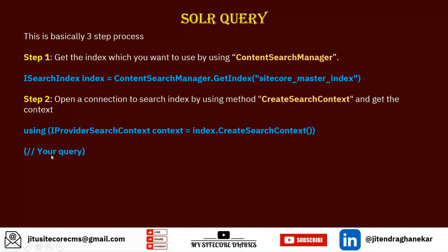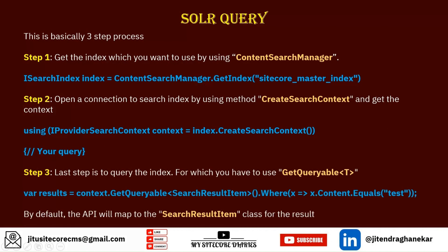Then within that context you have to write a query. The last step is to query the index, for which you use GetQueryable. You open the connection and then make a query like context.GetQueryable<T>(). By default, the type is SearchResultItem — this is the default class or model where you get the data.